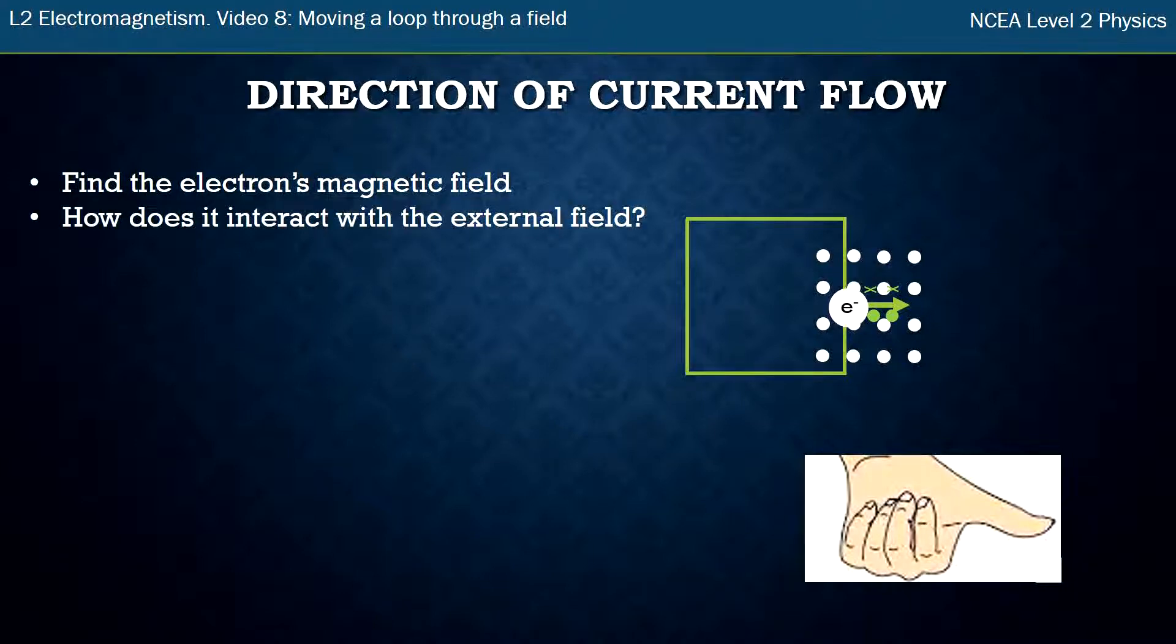Then we say how does that interact with the external field? The white dots. We're looking for opposites. Opposite the white dots are my green crosses and that's above the electron. So the electrons are forced upwards.